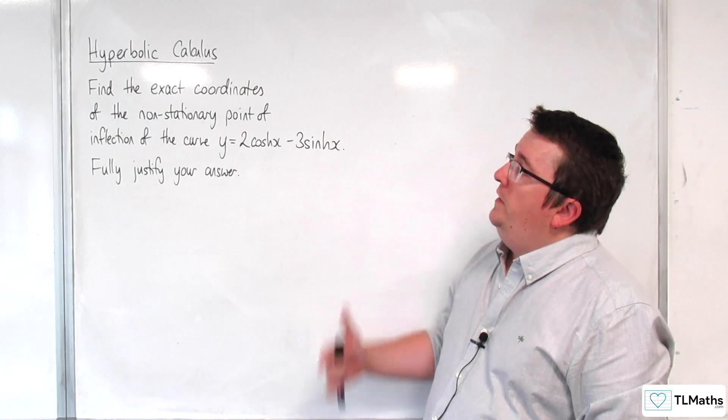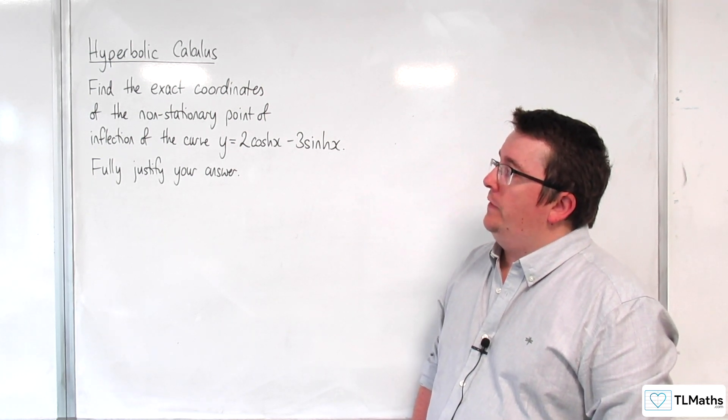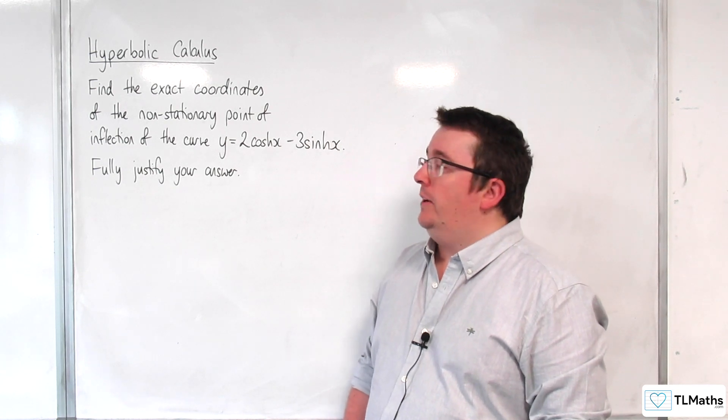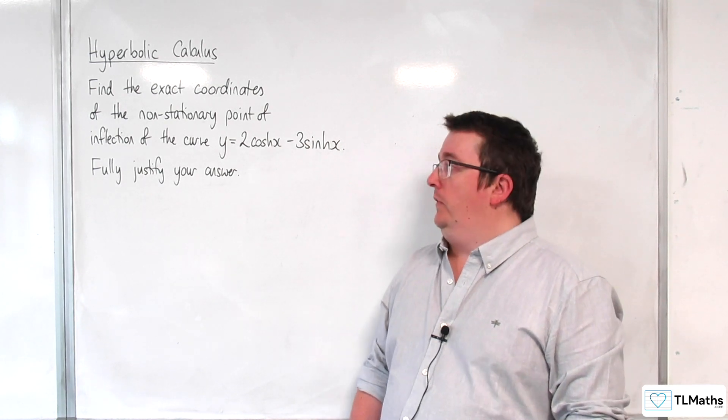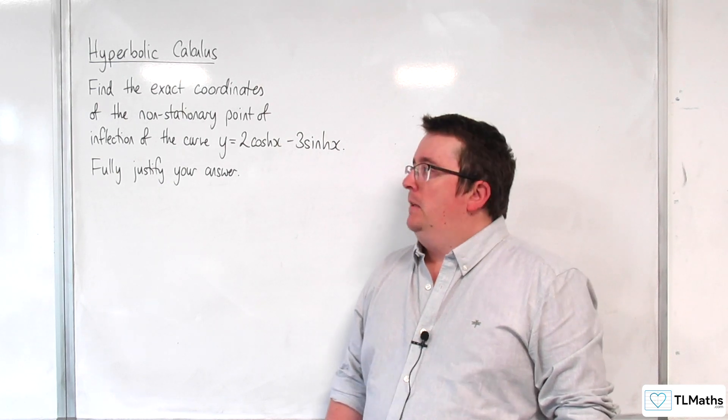In this video we're going to find the exact coordinates of the non-stationary point of inflection of the curve y equals 2cosh(x) take away 3sinh(x), and we're going to need to fully justify our answer.